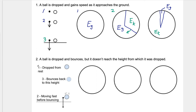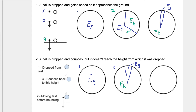Number two is a continuation of number one. Starting dropped from rest, the entire pie chart would be gravitational potential energy. It speeds up as it moves toward the ground, moving pretty fast right before it bounces. Position one is all gravitational PE; position two, just before impact, has just a sliver of gravitational potential energy remaining and most of the pie chart is kinetic energy.